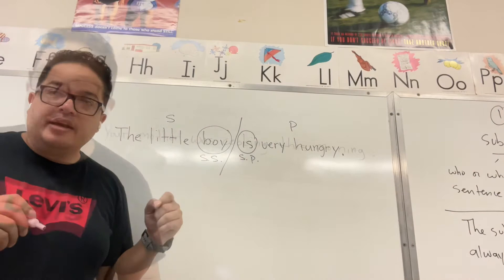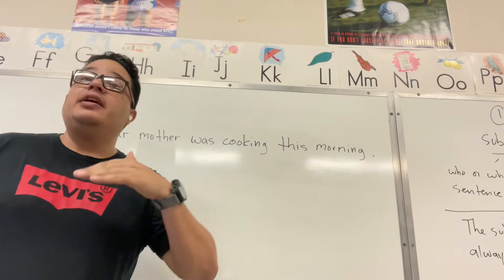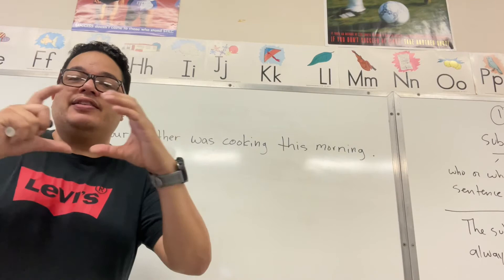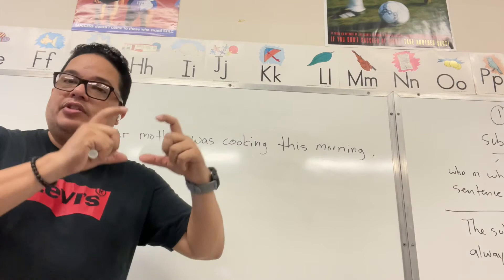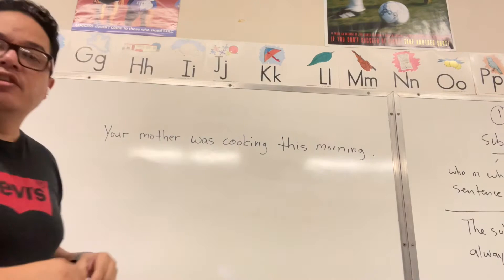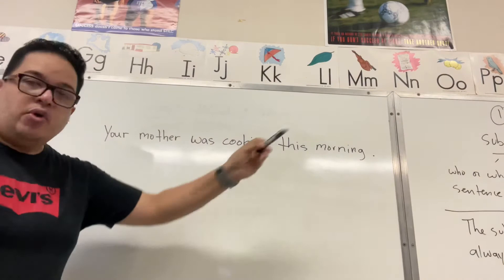Let's look at another example of how to divide a sentence into complete subject and complete predicate, and then inside of the complete subject we will identify the simple subject, and inside of the complete predicate we will identify the verb, which is the simple predicate. Remember that verb and simple predicate are the same thing. The sentence reads: your mother was cooking this morning.